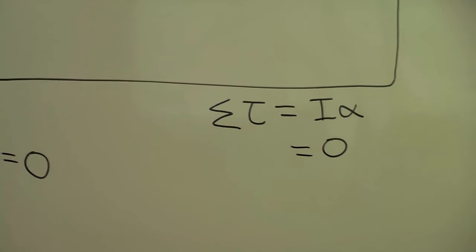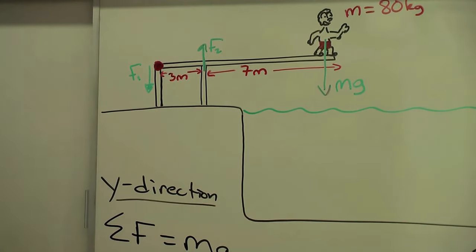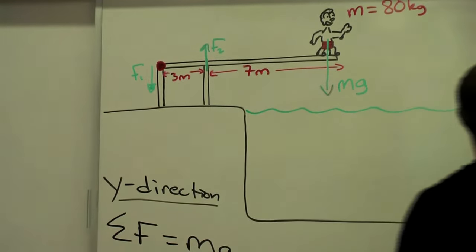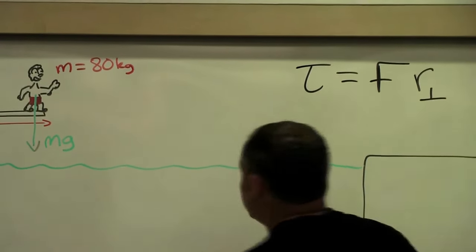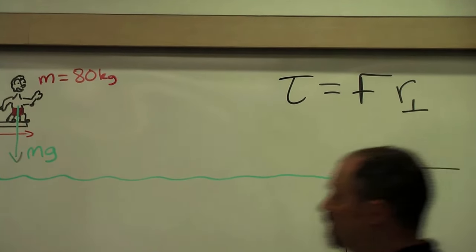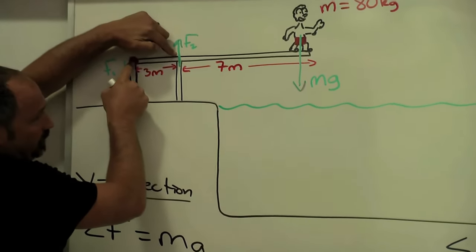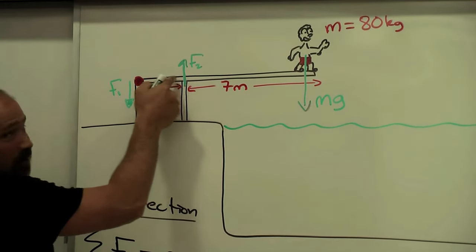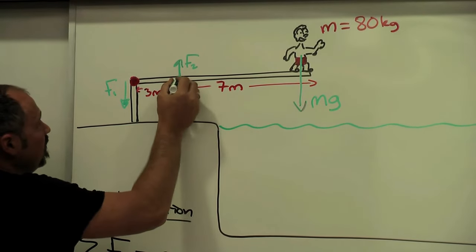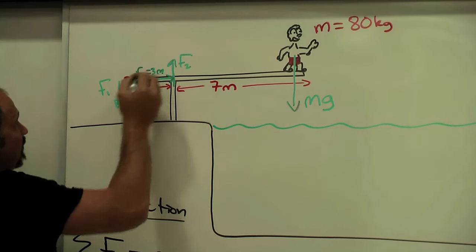Now if we choose one of these guys as our pivot point, for example this guy, then the perpendicular distance is zero and we'll only have two variables. Because remember that by definition torque is equal to the force times the perpendicular distance from the application of the force. So for example from F2 to the pivot point. Let's draw that in.